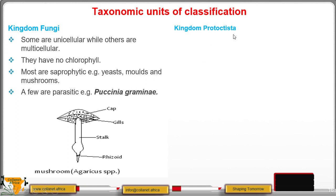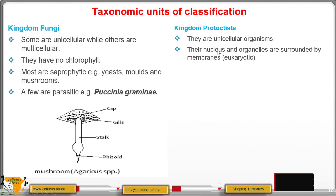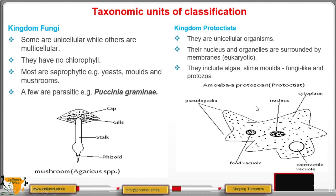In kingdom Protoctista, the organisms are unicellular. Their nuclei and organelles are surrounded by membranes; hence they are eukaryotic. They include algae, slime molds, fungi, and protozoa. For example, amoeba — a protozoan — has a contractile vacuole for removal of excess water, and oxygen can diffuse in as carbon dioxide diffuses out, across the cell membrane.